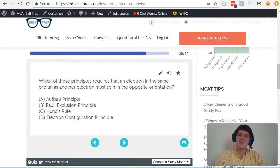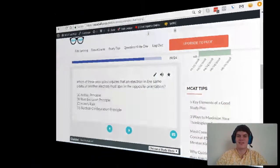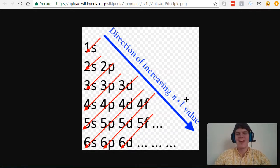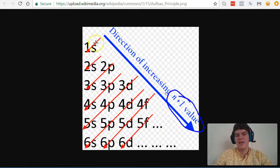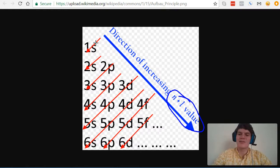Each answer choice is an important concept that relates to electrons and how they are oriented. Because each one is very important to understand for the MCAT, I want to cover each one in detail. Let's start with answer choice A, the Aufbau Principle. The Aufbau Principle is related to how electrons fill orbitals. The Aufbau Principle states that electrons will fill orbitals from lowest energy orbital to highest energy orbital. And the way we determine which orbitals have more energy than other orbitals is using this n plus l value.